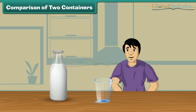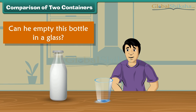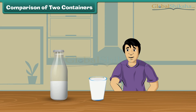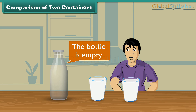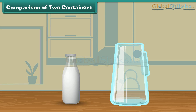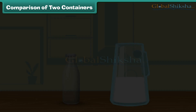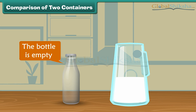Sam brought a bottle of milk. Can he empty this bottle in a glass? He fills the glass with the milk from the bottle. Look, milk is still there in the bottle. He then takes another glass and pours the remaining milk in it. Look, the bottle is empty now. Thus, Sam can empty this bottle of milk into two glasses. Can we empty this bottle in a jug? Let us see. Fill the jug with the milk. The bottle is empty. We can empty this bottle in a jug.